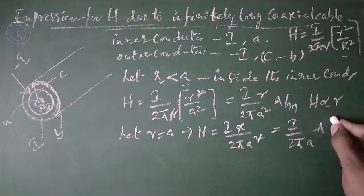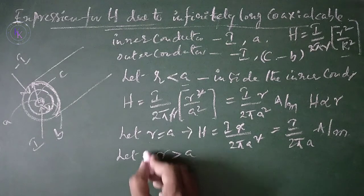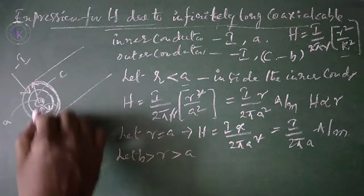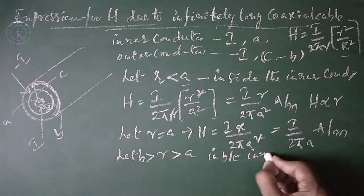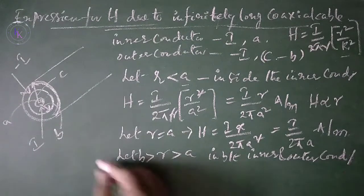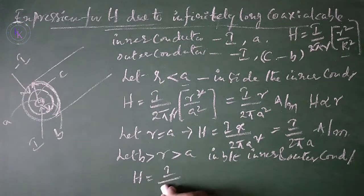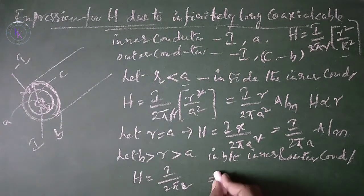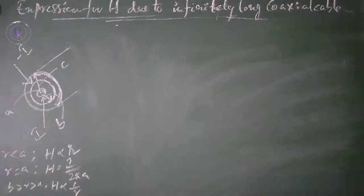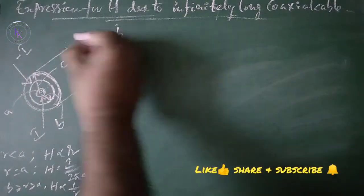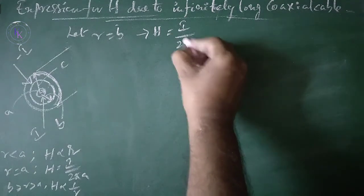Let r be greater than a and less than b, which is in between the inner and outer conductors. Outside the current-carrying inner conductor, H is given by I divided by 2πr. In this case H is proportional to 1/r. At r equals b, H equals I divided by 2πb.